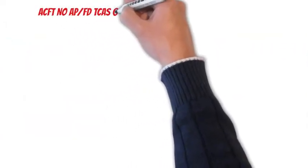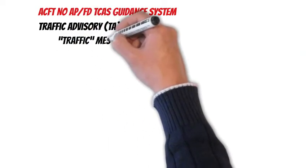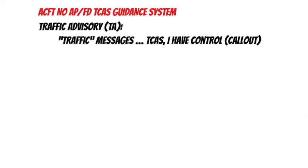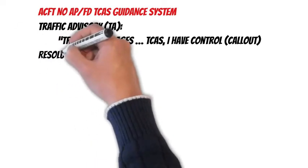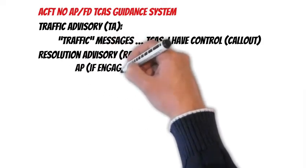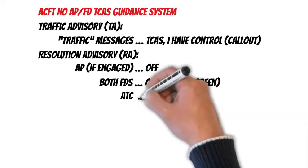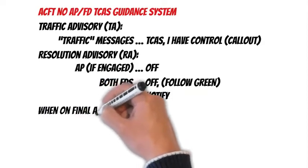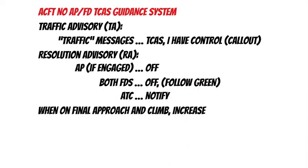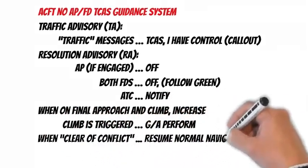Memory Items: Aircraft with no Autopilot Flight Directors TCAS procedure. Traffic Advisory, TA: Traffic, Traffic messages, TCAS, I have control callout. Resolution Advisory, RA: AP if engaged off, both Flight Directors off, ATC notify. When on final approach and climb or increase climb is triggered, go-around perform. When clear of conflict, resume normal navigation.